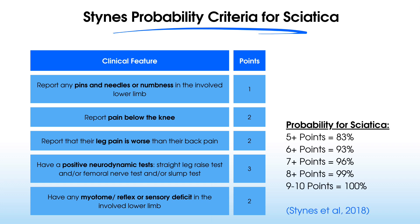We then add those points up, and as you can see on the right-hand side, there is an increased probability for your patient having sciatica if they have five or more points. This gives us an 83% chance of probability. However, as you can see, this percentage jumps up rapidly when we get to six, seven, eight, and even nine points.